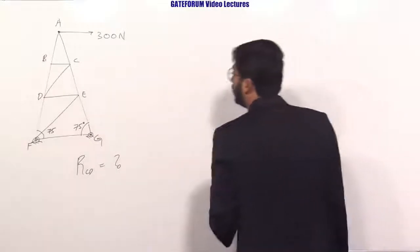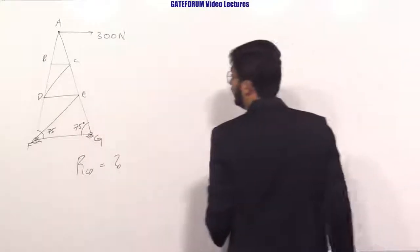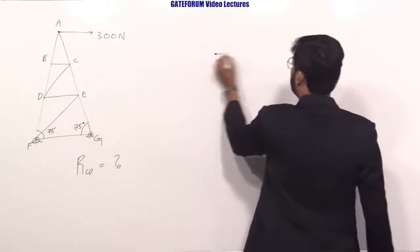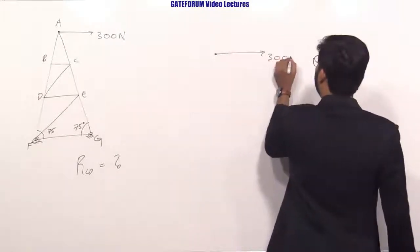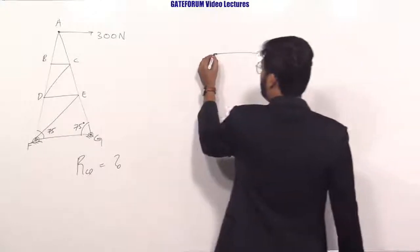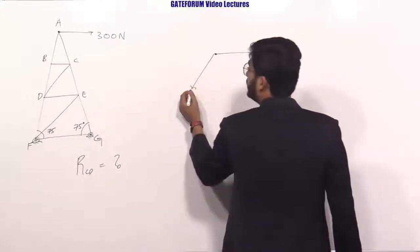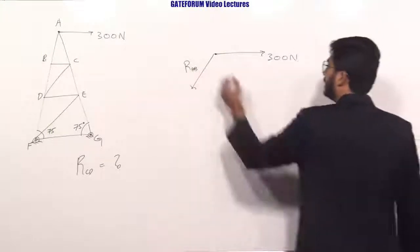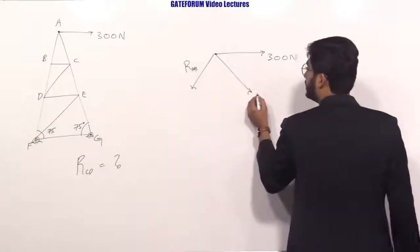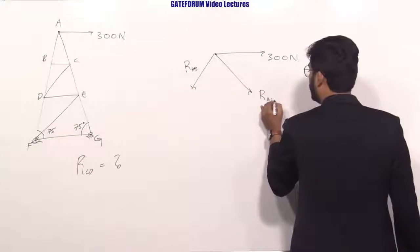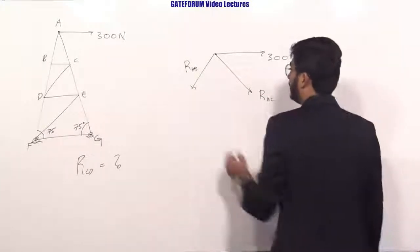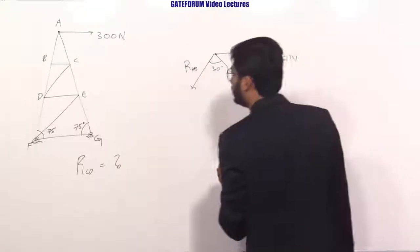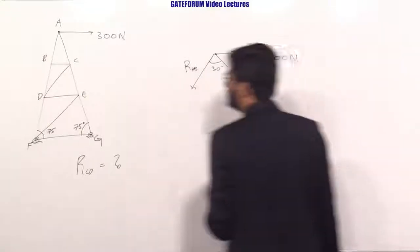Starting our discussion with joint A: the applied force is 300 Newtons. Let RAB be the force in member AB and RAC be the force in member AC. The angle subtended between these two will be 30 degrees.